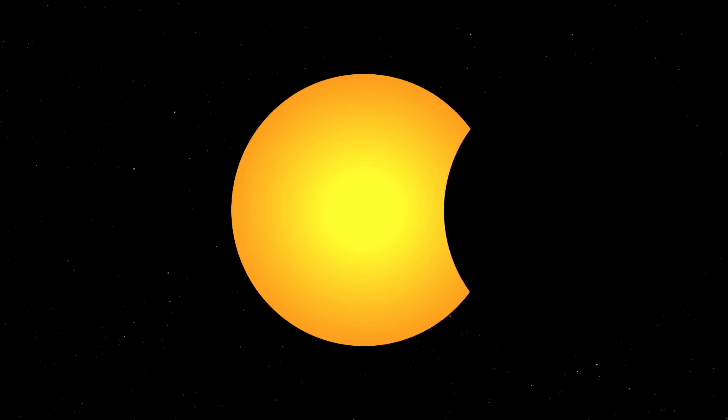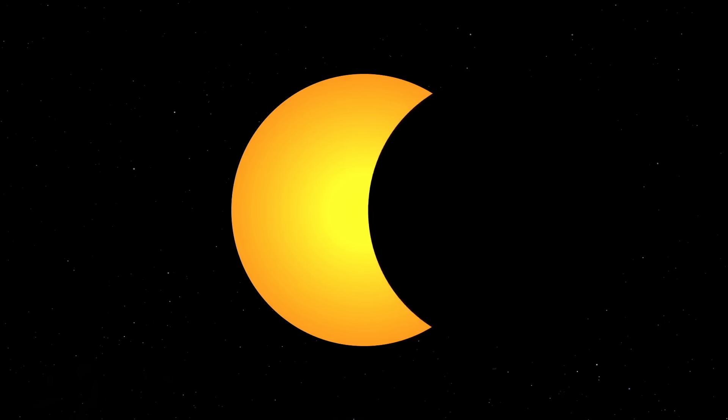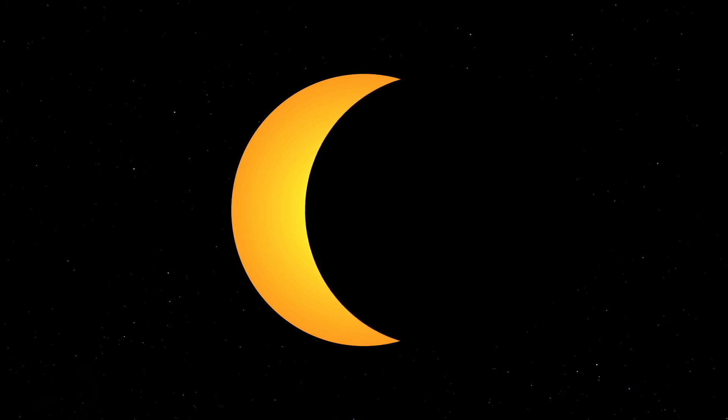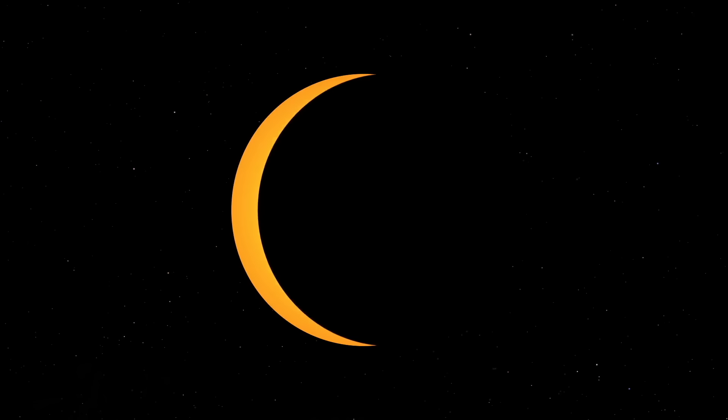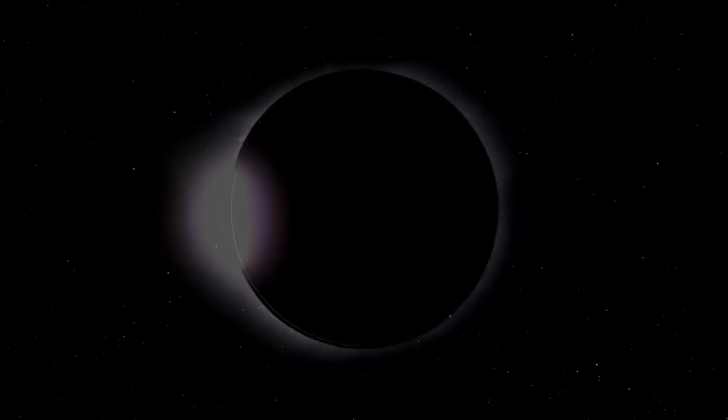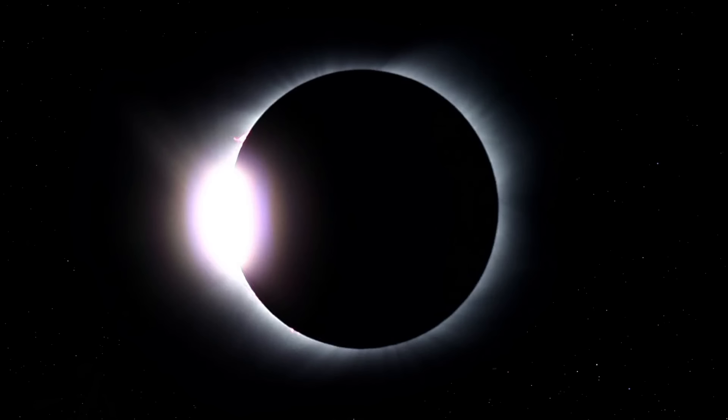During a total eclipse, you still have to use filters or projection during all the partial phases leading up to totality. Only during totality is it safe to use your naked eyes. Here, you see the diamond ring effect as the last bit of the sun disappears behind the moon.